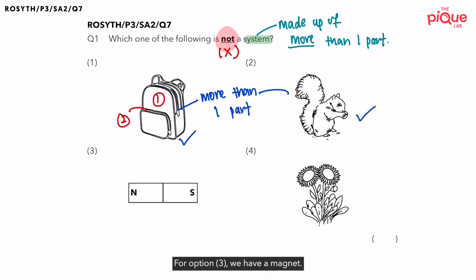Option 3, we have magnet. Can you tell me how many poles are there for a magnet? There are two poles. You have the north pole and you also have the south pole. So since magnets have two poles, it also means that magnets are made up of two parts. Is that correct?